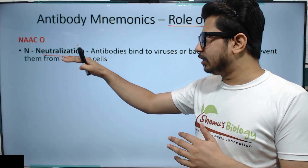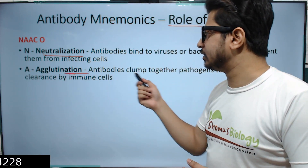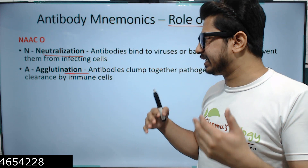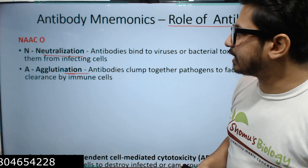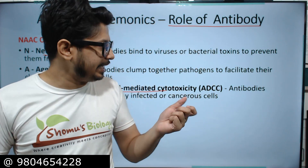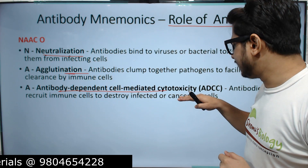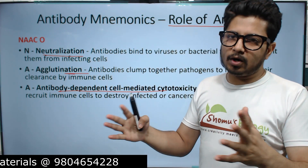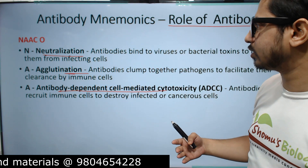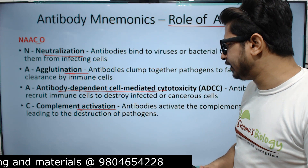N is Neutralization: antibodies bind to viruses and bacterial toxins to prevent them from infecting our cells. A is Agglutination: antibodies clamp together pathogens to facilitate their clearance by immune cells. The second A stands for Antibody-Dependent Cell-mediated Cytotoxicity — ADCC — where antibodies recruit immune cells to destroy infected or cancerous cells.